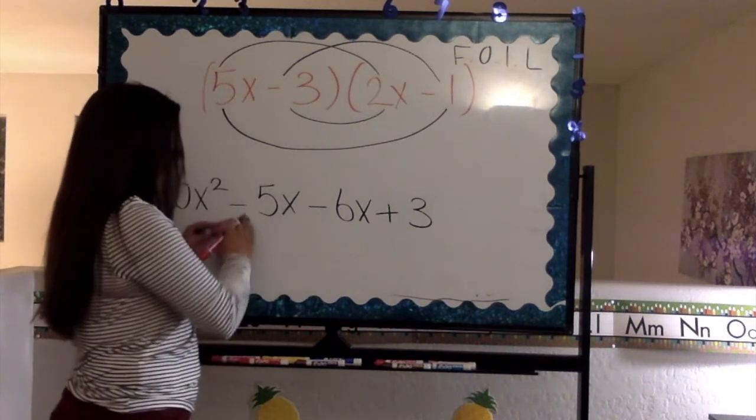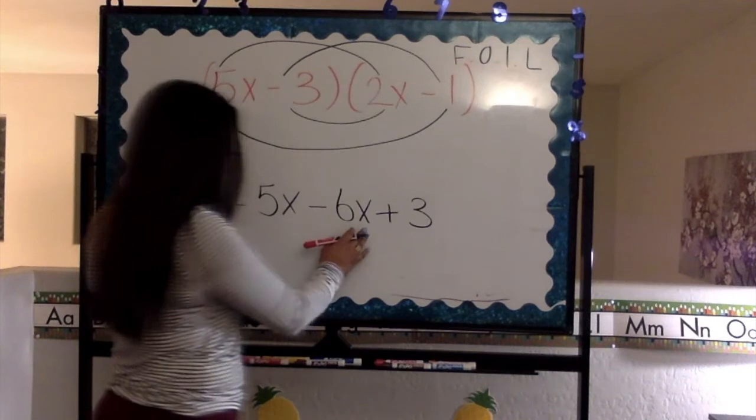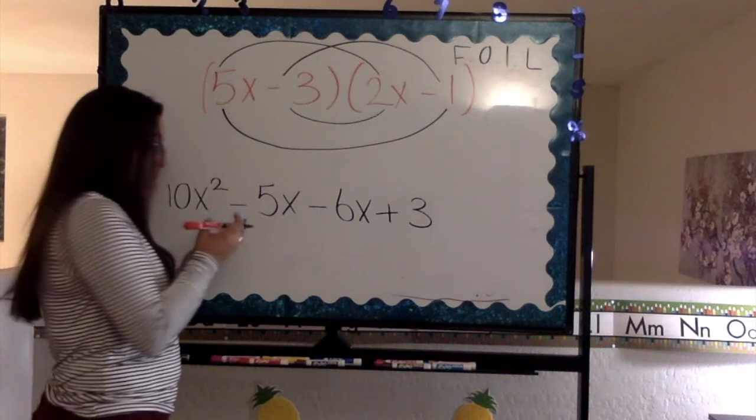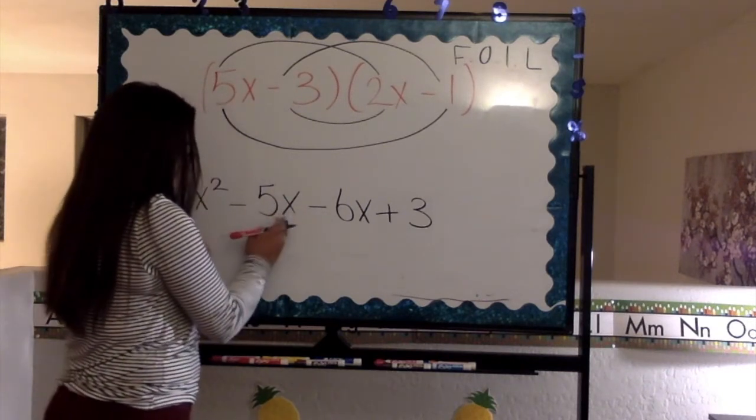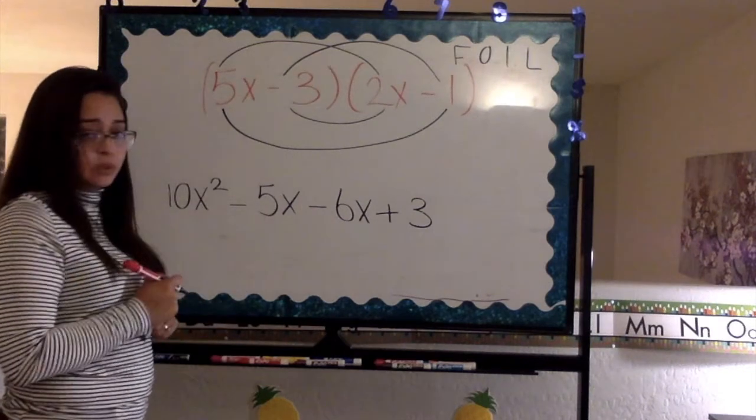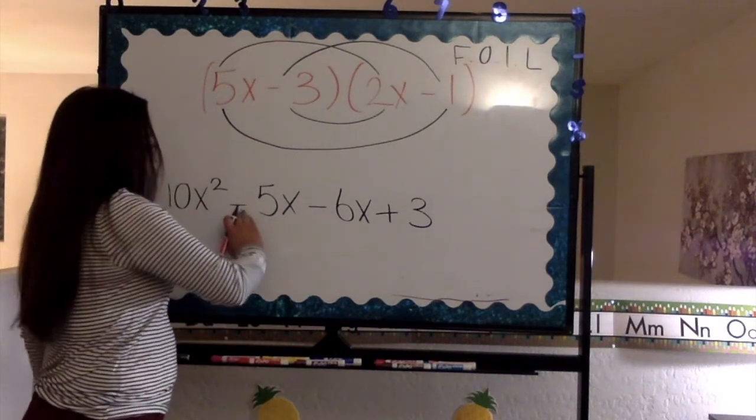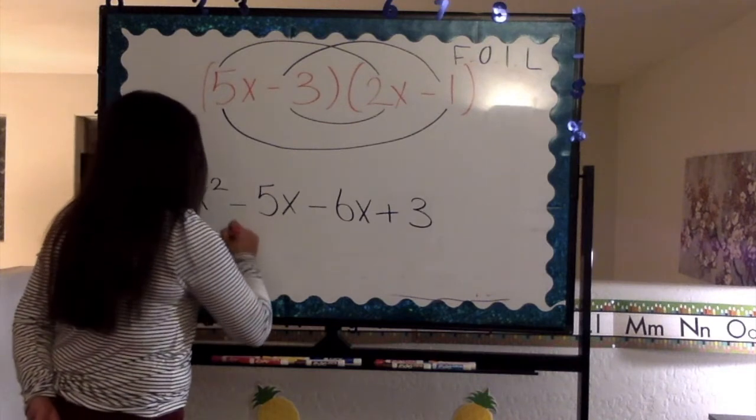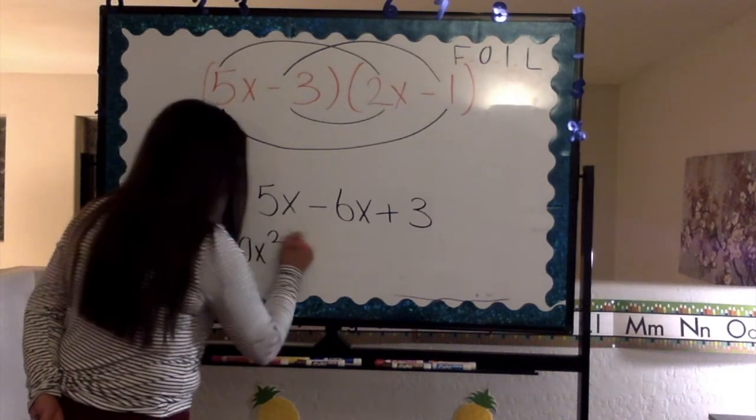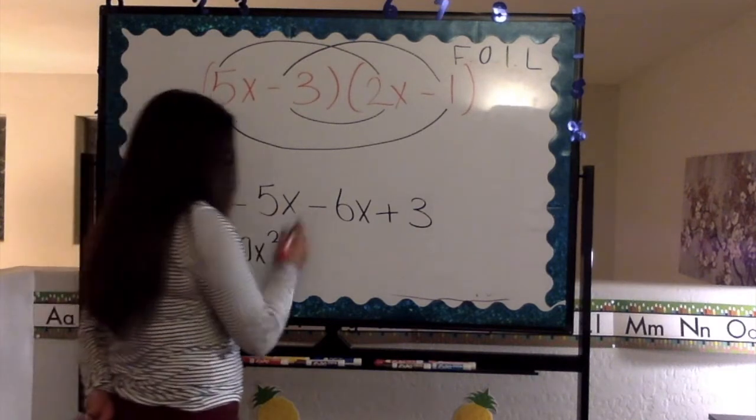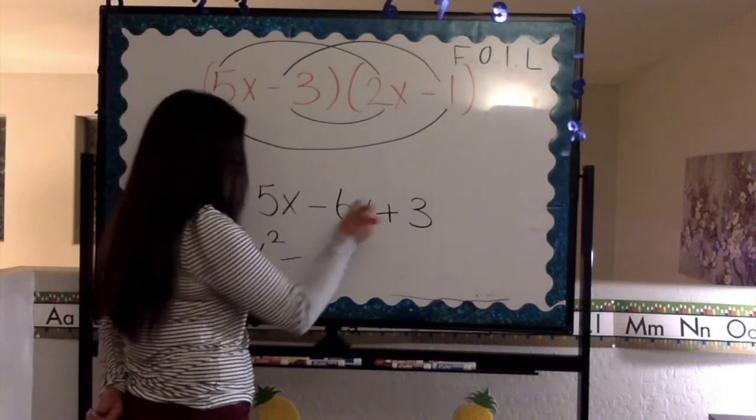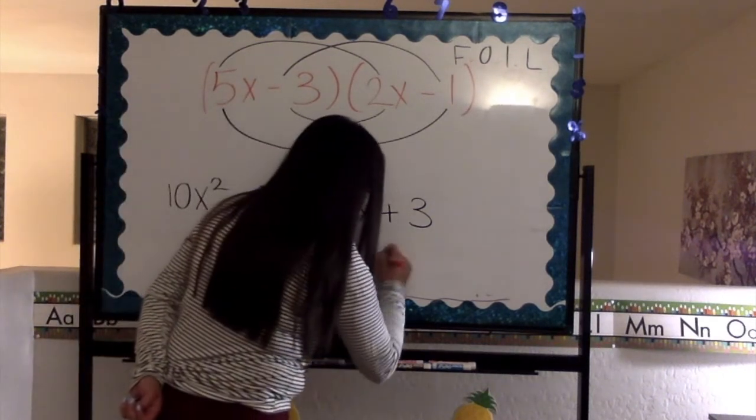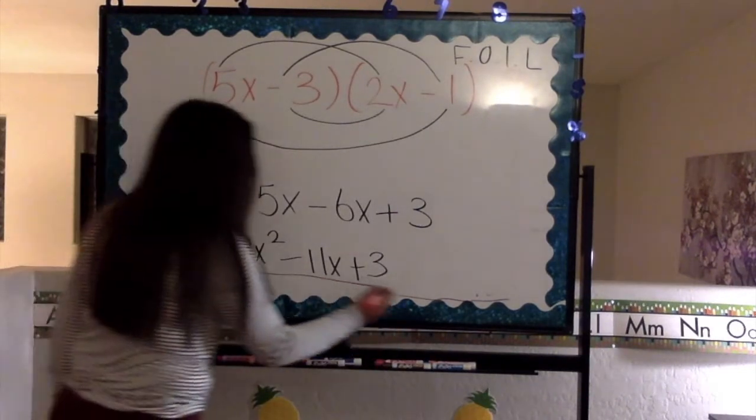So now we have negative 5x and negative 6x. We're going to combine them because they both have a single x. So when we're combining them, we're going to sum them up because we have a negative and a negative, so that means we add them. So we leave 10x squared as it is. Then combining negative 5x and 6x, that gives us negative 11x. And plus 3, we bring down our 3. And this is our final answer.